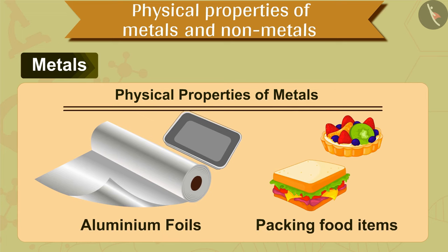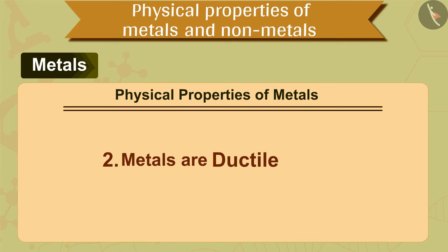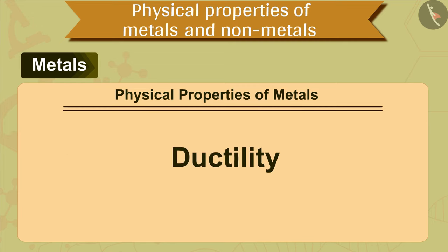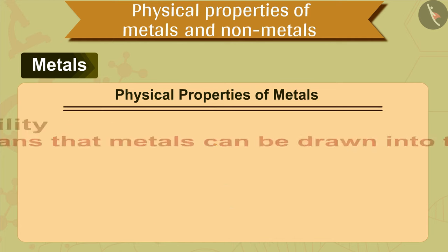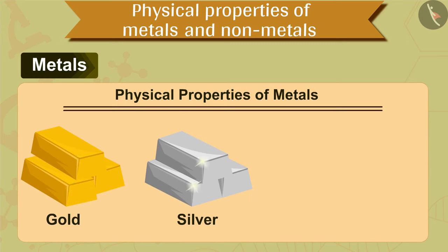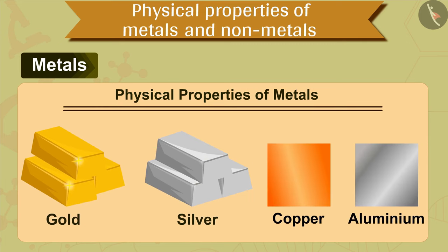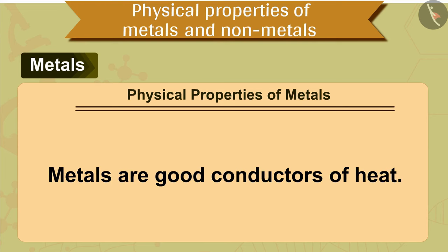The second property is that metals are ductile. What is the meaning of ductility? It means that metals can be drawn into thin wires. Gold is the most ductile metal. Silver is also among the best ductile metals. Copper and aluminum are also ductile and can be drawn into thin copper wires and aluminum wires.